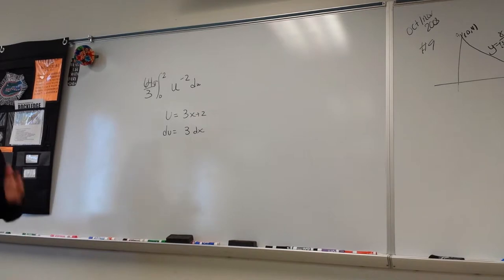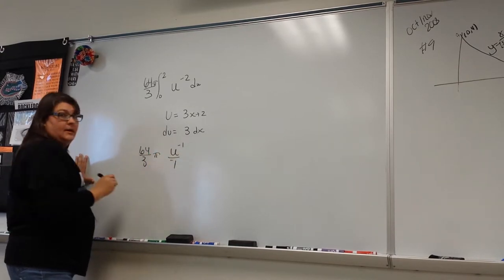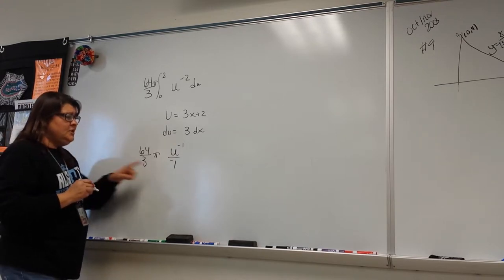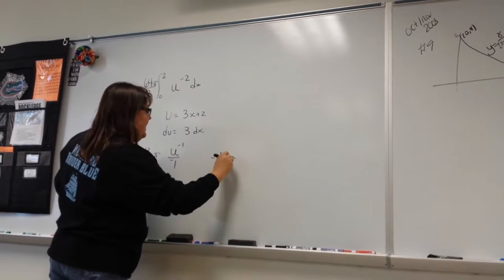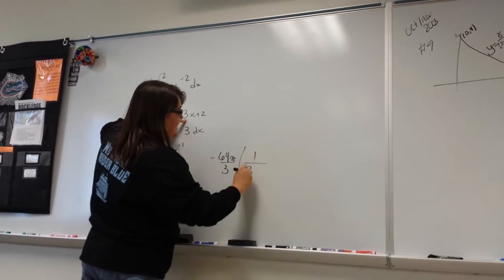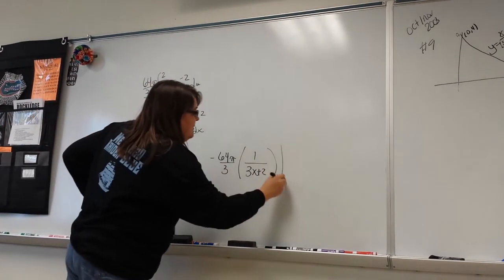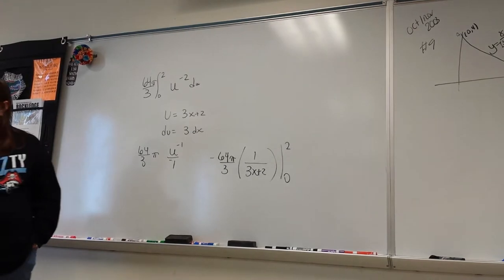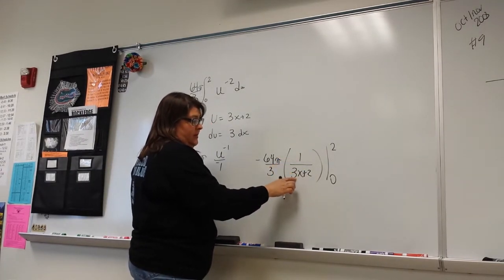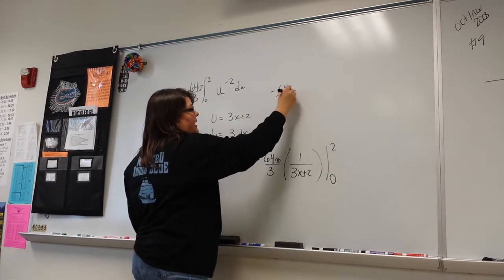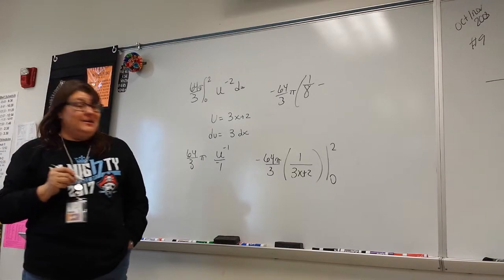So I have 64 thirds pi, and then u to the negative one over negative one. Cleaning it up — that negative one can come to the front: negative 64 pi over three. And u was 3x plus 2, swinging it down to the first power. Assessing from zero to two: plugging in two gives one over eight; plugging in zero gives one over two. So negative 64 thirds pi times one-eighth minus one-half.